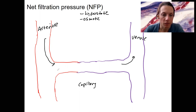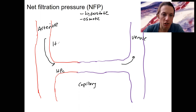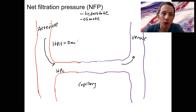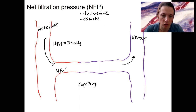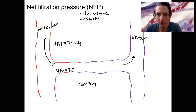First of all, we're going to have hydrostatic pressure in the capillary. We're going to have hydrostatic pressure in the interstitial fluid — we're going to call this zero. It often is close to zero, very low. I'm going to write millimeters of mercury once to remind you that's the units. Hydrostatic pressure in the capillary is 35. This can vary, but these are the numbers I'm going to use as an example.